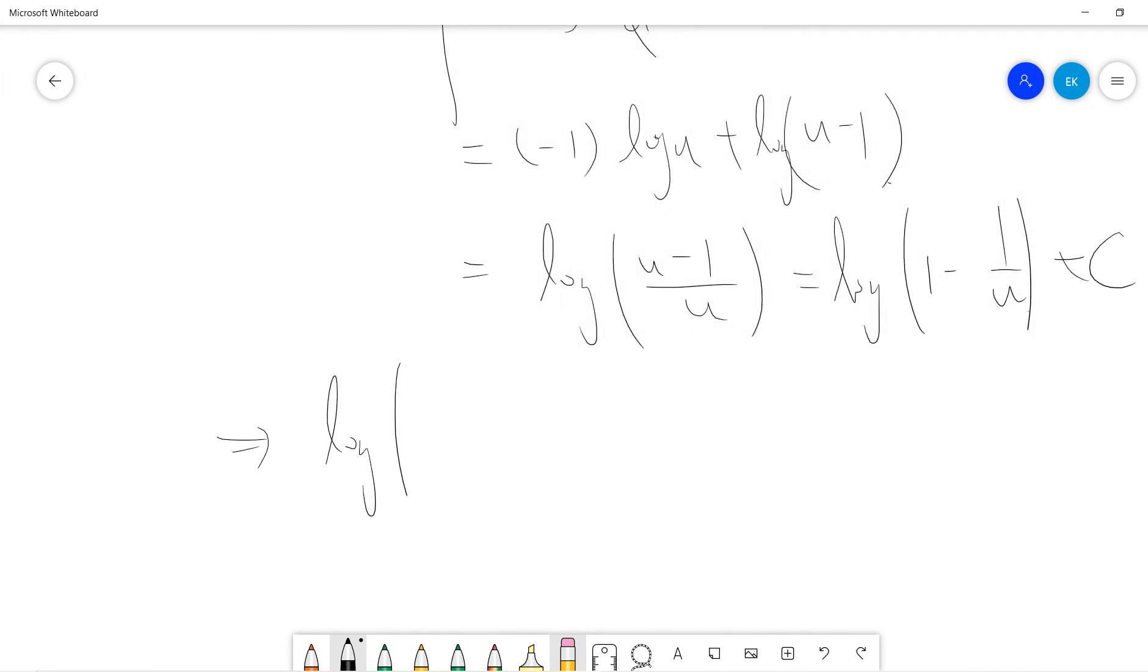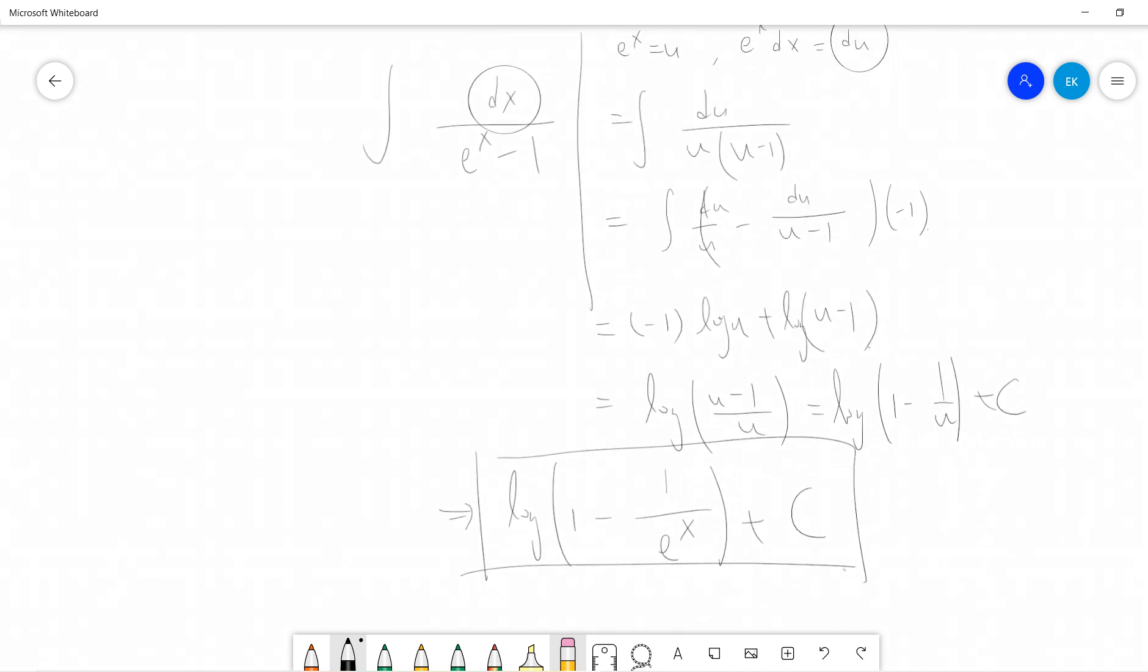So the answer will be ln(1 minus 1 divided by exponential x) plus constant. Okay, so this is the result.